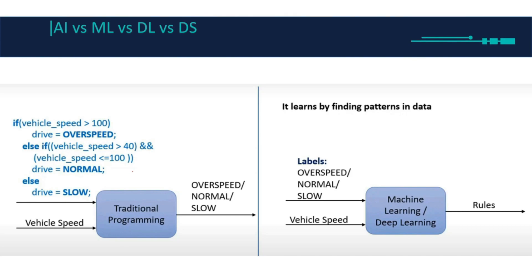If I am driving a car and I have three categories — over speed, normal, and slow — and I'm writing this in traditional programming, I'd do it with if/else: if the vehicle speed is greater than 100, the drive label is over speed; else if the vehicle speed is greater than 40 but less than 100, the driving category is normal.